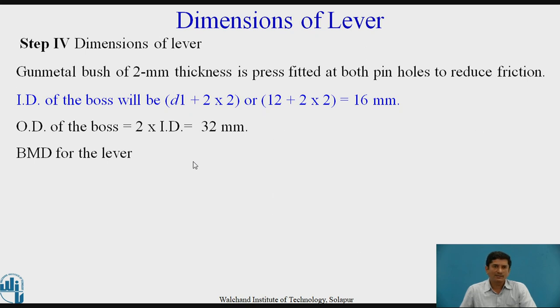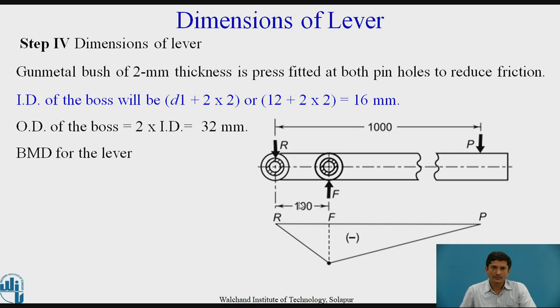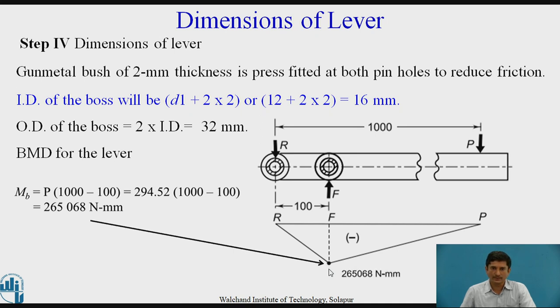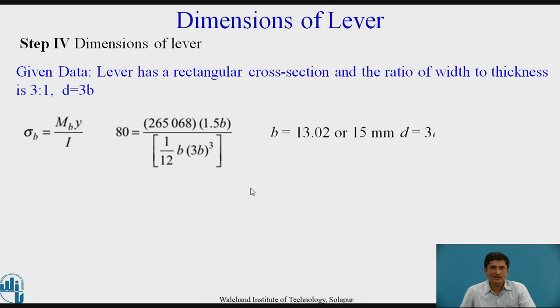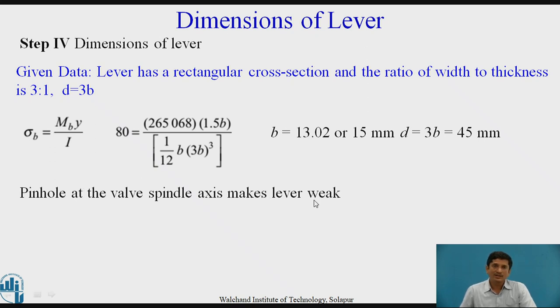We need to calculate the bending moment diagram for the lever. Bending moment will be given by P multiplied by 1000 minus 100. That comes out to be 265068 N-mm. This is at the point F, the fulcrum point. The given data is, lever has a rectangular cross section and the ratio of width to thickness is 3 is to 1. In other words, D equals 3 times B. We can use that and calculate sigma B equals M by Z. Use the equation and find out what is B and D.